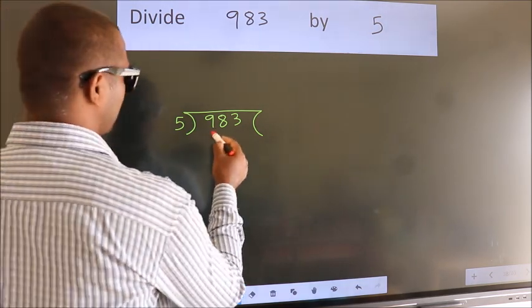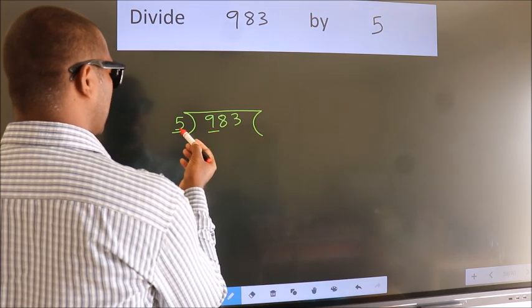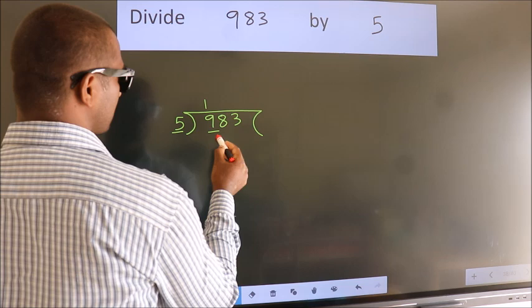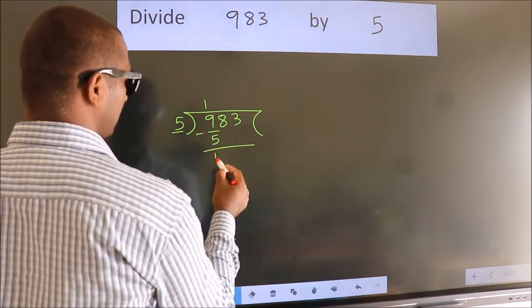Here we have 9, here 5. A number close to 9 in the 5 table is 5 once, which is 5. Now we subtract and get 4.